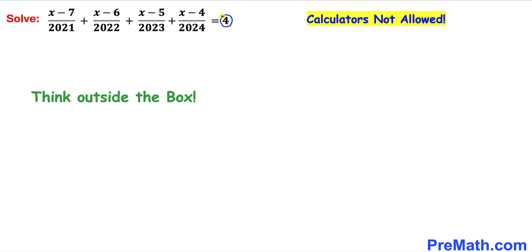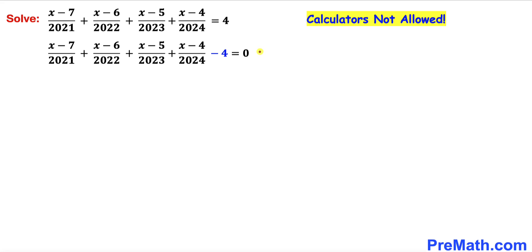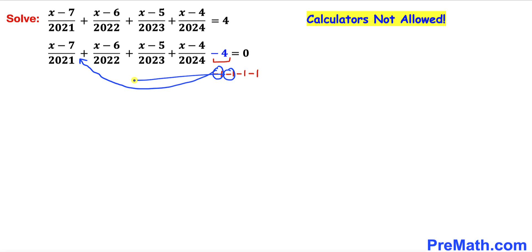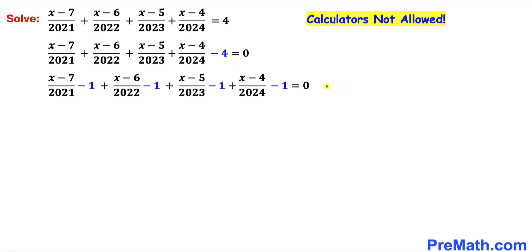Let's move this 4 to the left-hand side, so it becomes negative 4. Now let's tweak this negative 4 — it can be written as negative 1, negative 1, negative 1, and negative 1. I'm going to move each negative 1 to pair with each of the four terms: one over here, the next one to the next term, likewise the next, and finally the last negative 1 to the last term.